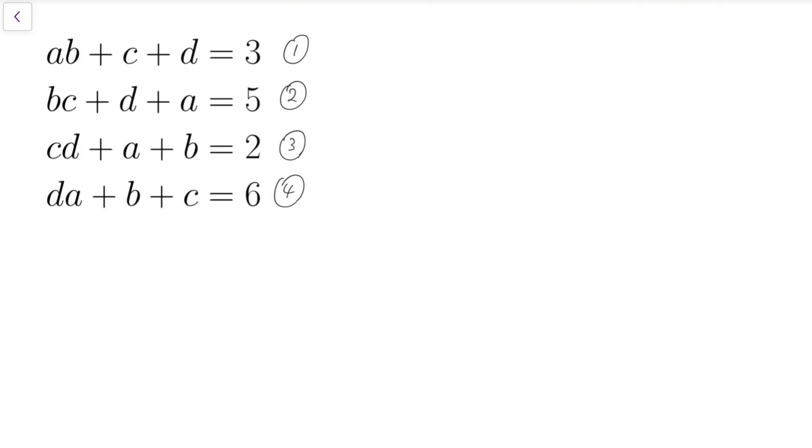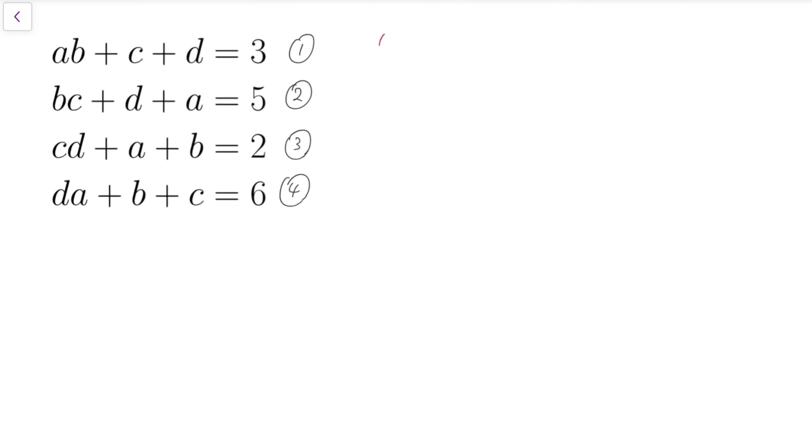So now we have four equations, and I'm going to do the following. First, subtract the first equation by the second equation. And I will get ab minus bc, which can be factorized as b times a minus c plus c minus a, and for the right we have minus 2.